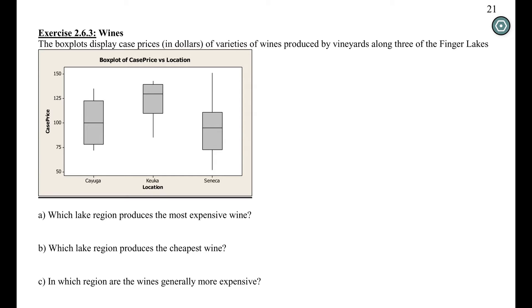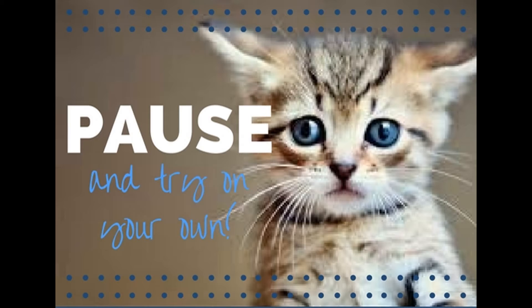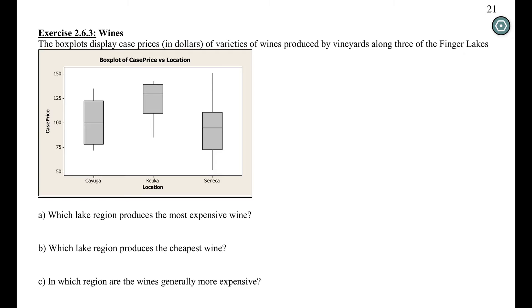If you want to just pause right now and try all of these questions, you can come back and we'll look at the answers together. So most expensive wine, in this case we're just asking which one has the largest max. Our largest maximum, we can see all the maximums of these particular Finger Lakes. Seneca has the largest maximum. So if I wanted to buy a coworker a very expensive bottle of wine, the most expensive case of wine I can get would be from Seneca.